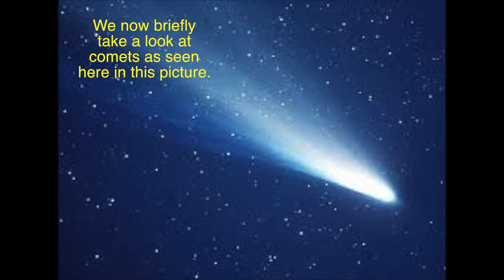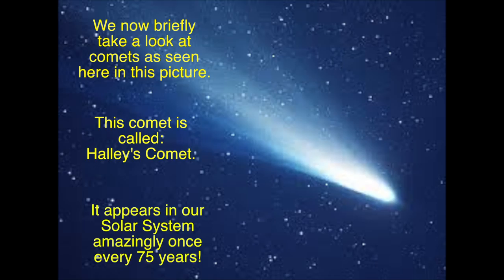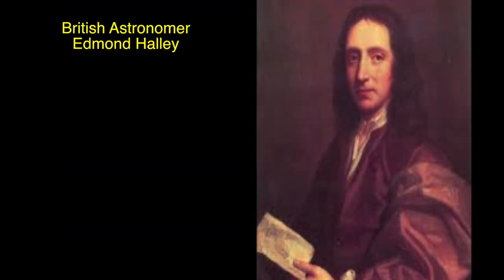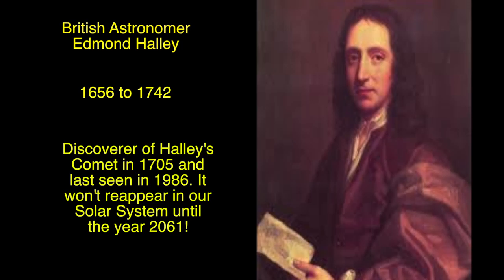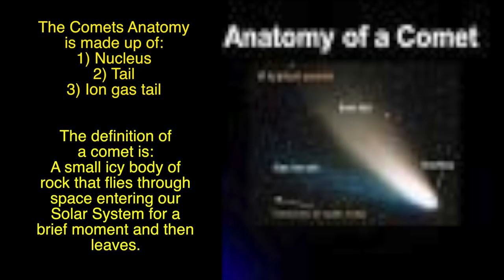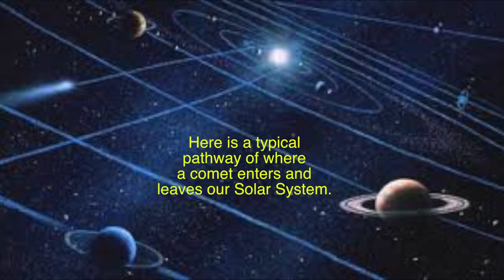We now briefly take a look at comets. This comet is called Halley's Comet, and it appears in our solar system basically once every 75 years. It was discovered by British astronomer Edmund Halley, 1656–1742, who discovered Halley's Comet in 1705; it was last seen in 1986 and won't reappear in our solar system until the year 2061. The comet's anatomy is made up of: one, nucleus; two, tail; three, ion gas tail. A comet is a small icy body rock that flies through space, entering our solar system for a brief moment and then leaves.